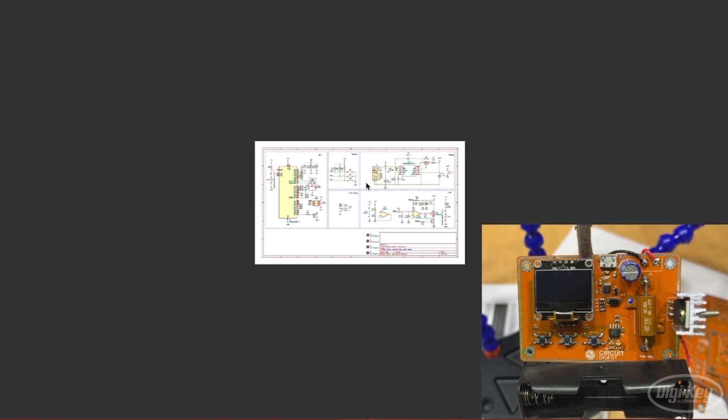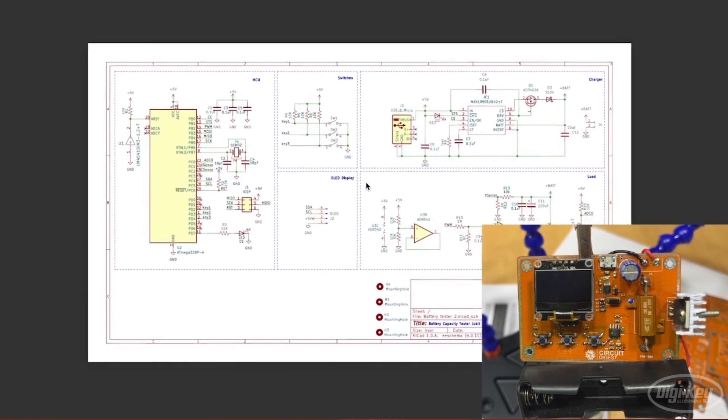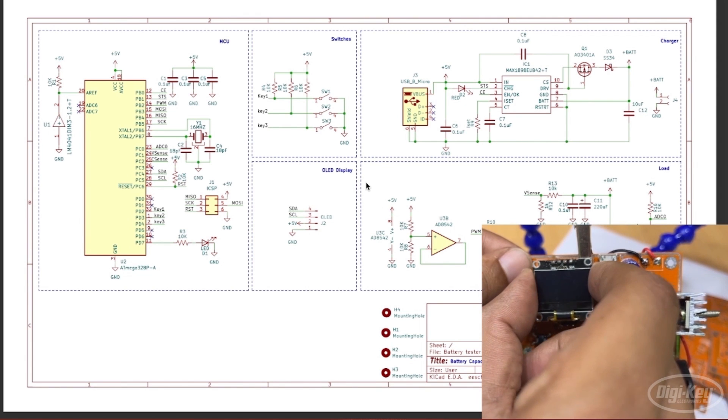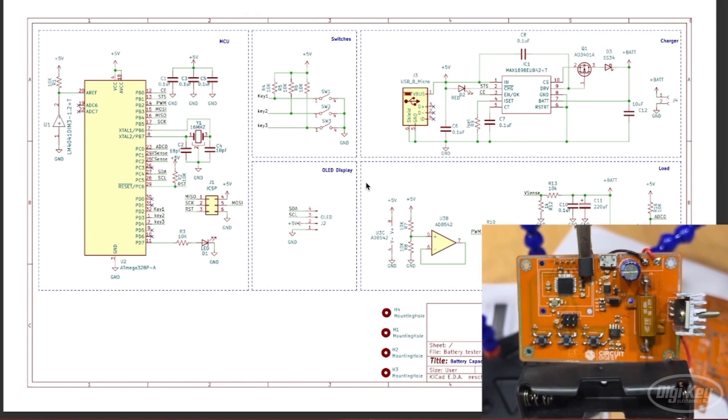Now that we have a basic understanding, let's take a look at the circuit diagram for this project. Here is the complete circuit diagram and you can also see the hardware over here so we can compare the circuit diagram with the actual hardware. I will remove the OLED display over here so that you can actually see the complete PCB board.